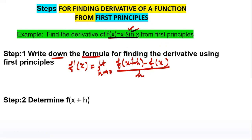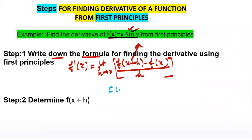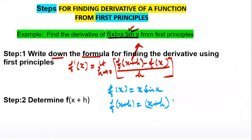Now we have to find out the value of f(x+h). f(x) is already given to us. We will substitute the values of f(x+h) and f(x) and calculate the limit. Since f(x) = x·sin(x), f(x+h) = (x+h)·sin(x+h), replacing x with (x+h) on both sides.